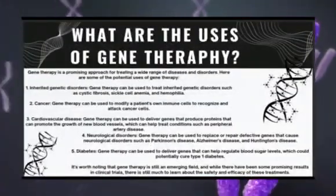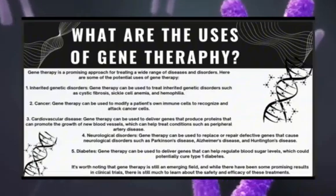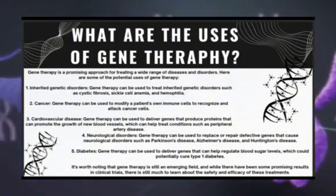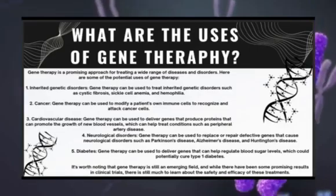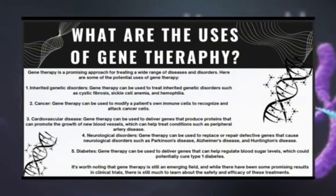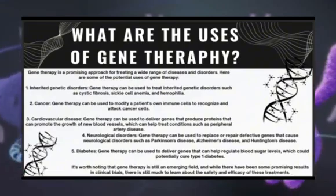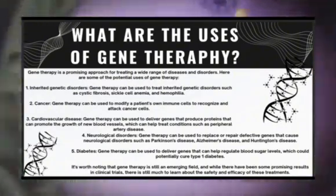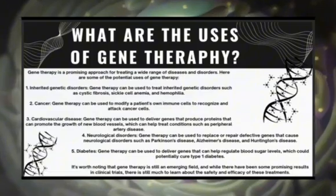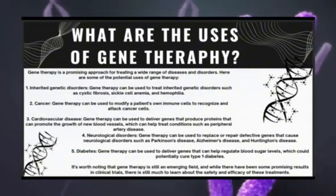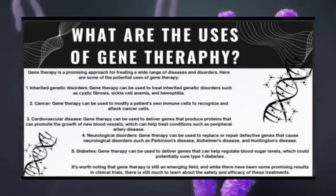What are the uses of gene therapy? Gene therapy is a promising approach for treating a wide range of diseases and disorders. First, inherited genetic disorders: gene therapy can be used to treat inherited genetic disorders such as cystic fibrosis, sickle cell anemia, and hemophilia. Second, cancer: gene therapy can be used to modify a patient's own immune cells to recognize and attack cancer cells. Third, cardiovascular disease: gene therapy can be used to deliver genes that produce proteins promoting the growth of new blood vessels, helping treat conditions such as peripheral artery disease.